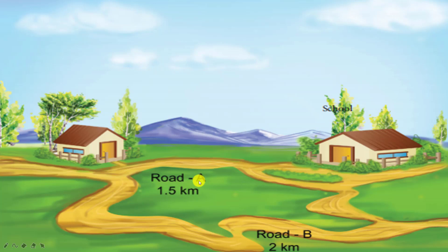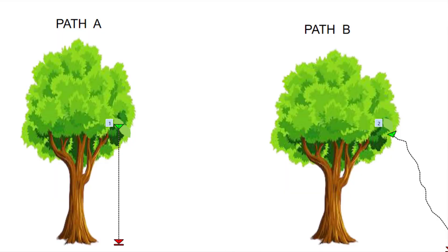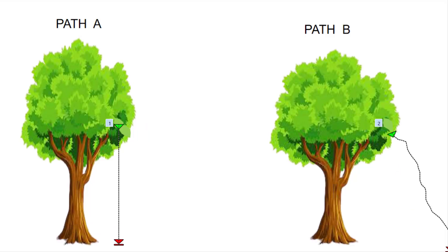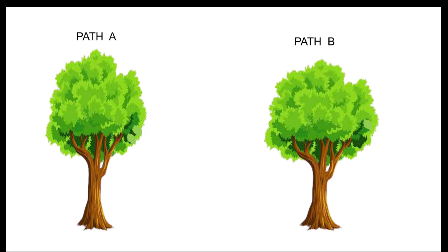Look at this picture here. From the tree, leaves are falling. Observe path A and path B. During a windy session, the leaves travel path B to reach the ground. But if you look at path A, the leaves directly reach the ground.